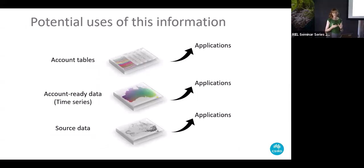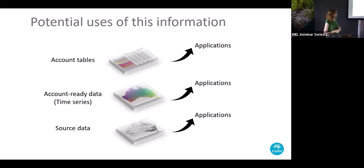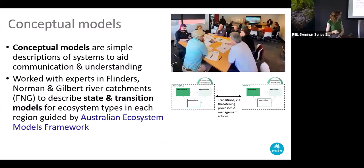Account information comes in many different forms with different applications depending on what form you use. You can have tables — the Australian Bureau of Statistics website shows examples. There's also what we call account-ready data: continuous time series information, gridded information, or spreadsheets. And there can be sourced data as well that feeds into that account-ready data, which might be in its native resolution and native time series.